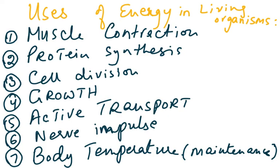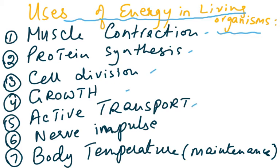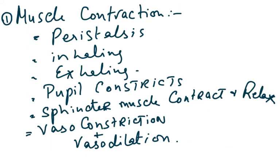The uses of energy in living organisms — not just humans — are seven: muscle contraction, protein synthesis, cell division, growth, active transport, passage of nerve impulses, and maintenance of body temperature. Make a mnemonic to remember these. Examples of muscle contraction include peristalsis, inhaling and exhaling, and pupil constriction and dilation.